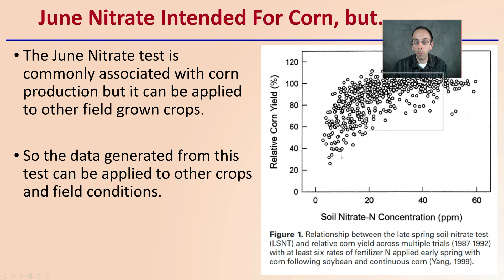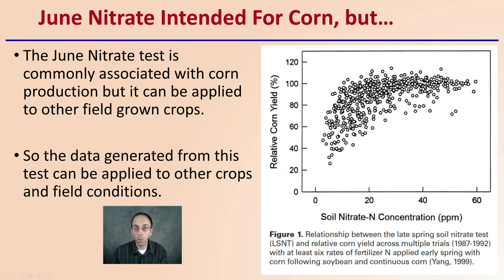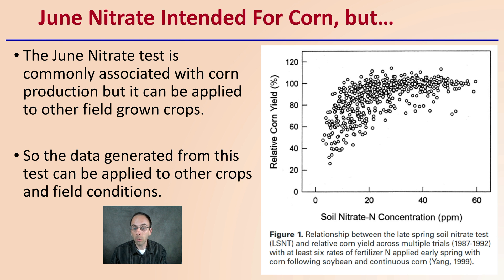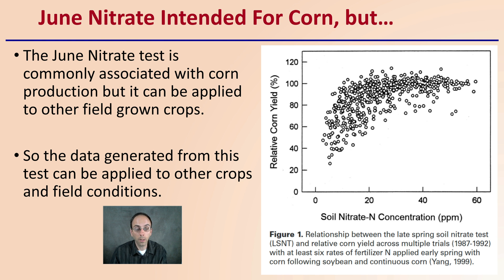Keep in mind that while you'll see a lot of correlation with it for corn — yes, that was where it developed from — it is applicable to many other crops. The June Nitrate Test is commonly associated with corn production, but can also be applied to other field-grown crops. The data generated from this test can be applied to other crops and field conditions.